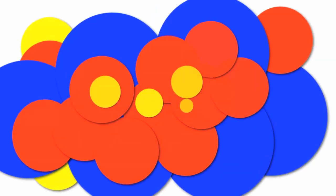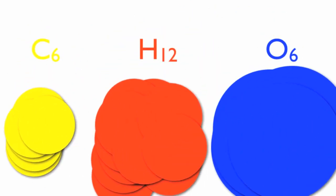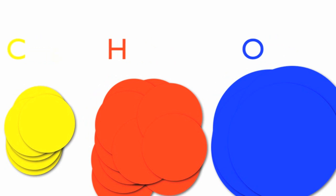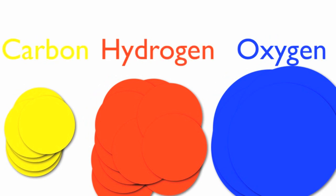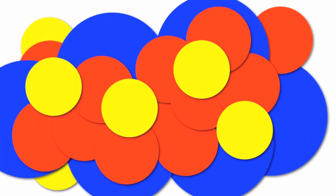Once the plant has its raw materials, it can make two new things. The first product of photosynthesis is C₆H₁₂O₆, a compound made of carbon, hydrogen, and oxygen atoms. We can call this compound glucose.